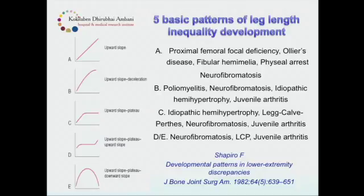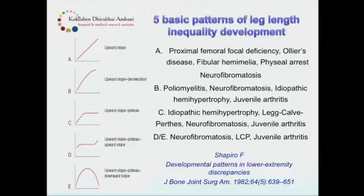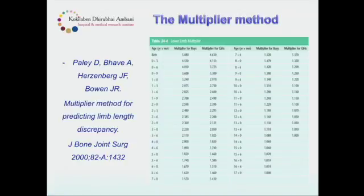Frederick Shapiro came to tell us that growth just doesn't happen that way — there are different patterns of growth inhibition. Not every child with a discrepancy follows these beautiful straight-line graphs. It's only the congenital ones who have a straight line with an upward slope. Several neuromuscular, developmental, and congenital hypertrophic conditions have different patterns: upward slope then plateau, upward slope then deceleration, upward-plateau-then-up again, or rapid acceleration then deceleration. Depending on these five different growth patterns, Shapiro made us understand that growth prediction is not all that simple.